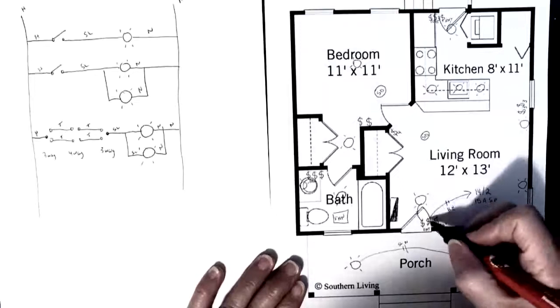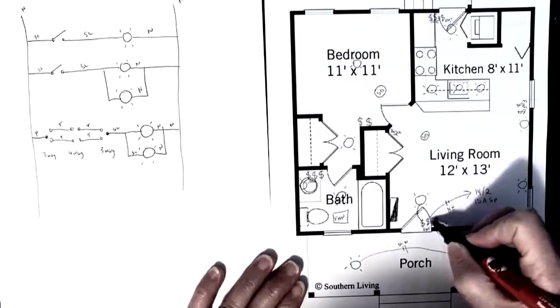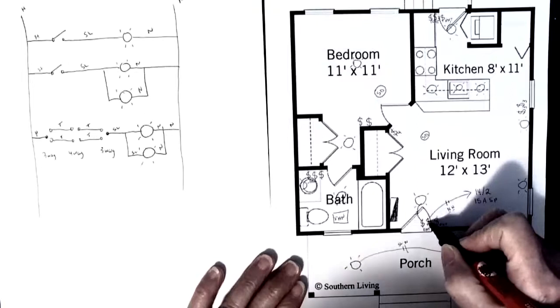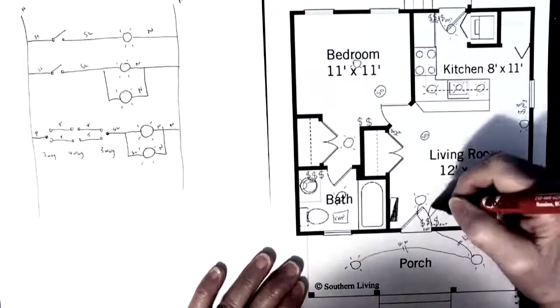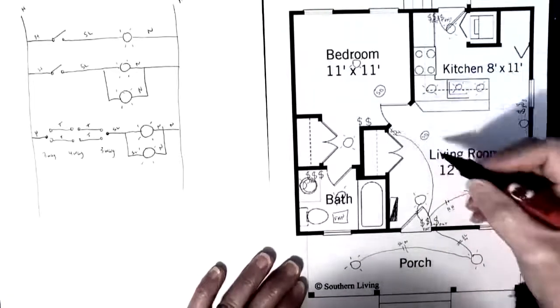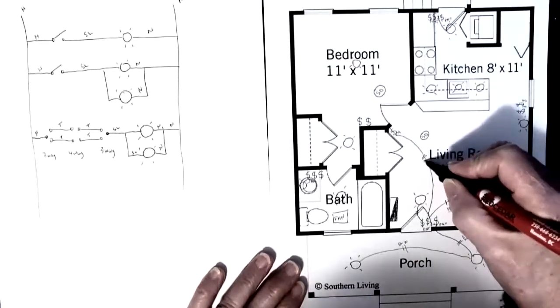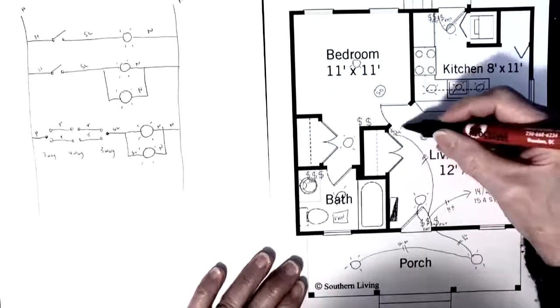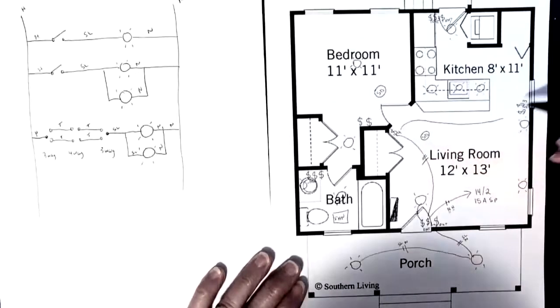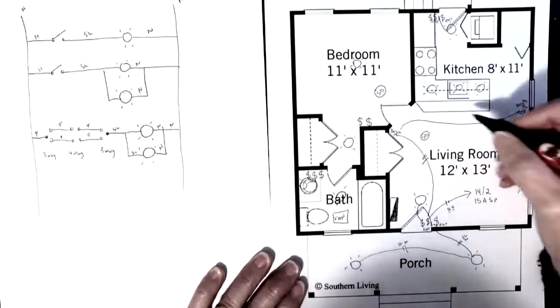So we already have power here, so we have a hot and neutral, so our hot goes into our three-way switch. We have to take a wire over to our four-way switch, and in that wire are going to be two travelers and a neutral, and then another wire over to the last three-way.